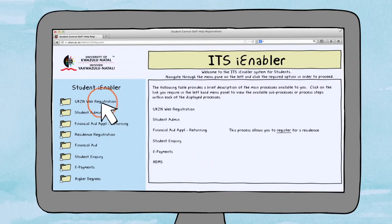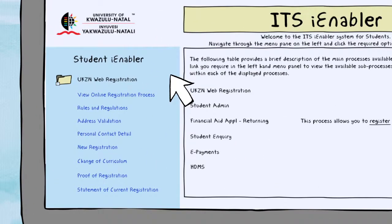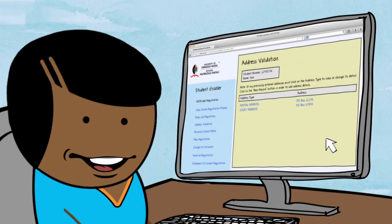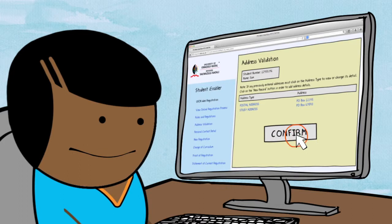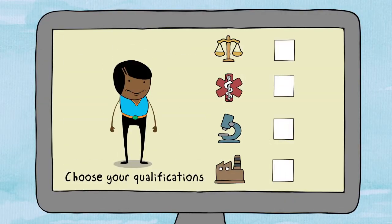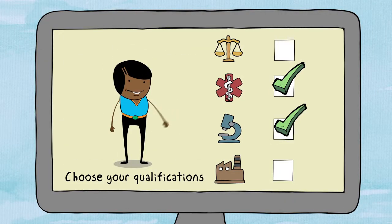Click on the UKZN web registration link on the left to expand it. Read and accept the terms and conditions. Check and confirm your contact details. Next, confirm your qualification and choose your relevant majors.